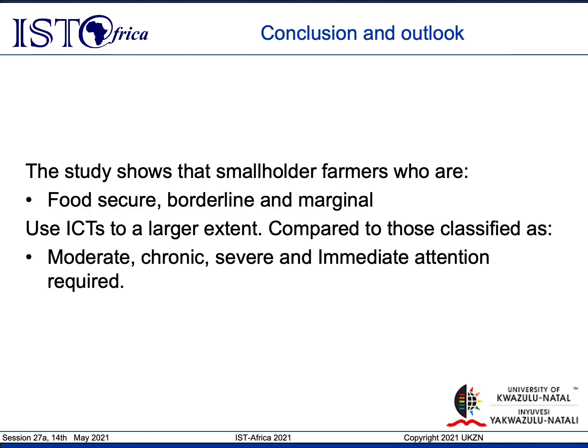In conclusion, the study shows that smallholder farmers who are food secure, borderline, and marginal in terms of their food security status use ICTs to a larger extent, compared to farmers who are classified as being moderate, chronic, severe, and immediate attention required.